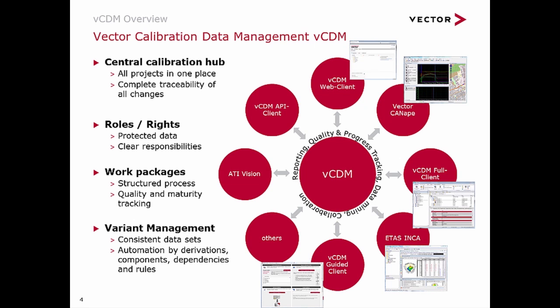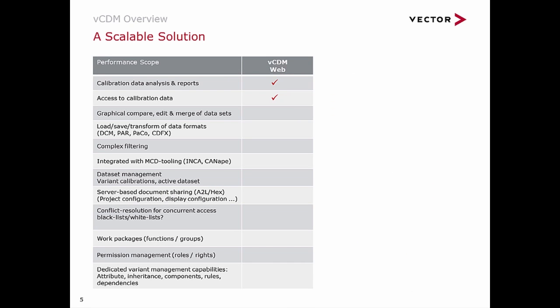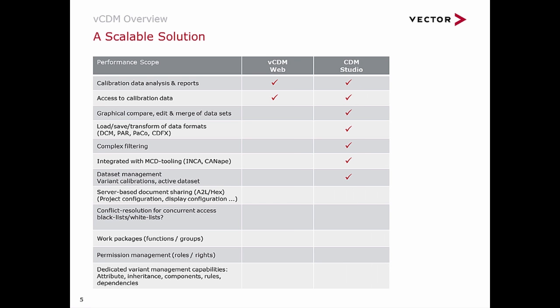VCDM's comprehensive tools for managing calibration variants deliver consistent datasets and provide great effectivity even for large numbers of variants. VCDM is a scalable CDM solution. The web client offers browser-based access to calibration information. Reports and analysis help department managers monitor projects, and neighboring departments can access released calibrations, for instance for validation at a HIL test bench. CDM Studio is a powerful calibration editor for all typical formats, directly integrated with calibration tools such as Vector CANape and ETAS INCA and with VCDM.